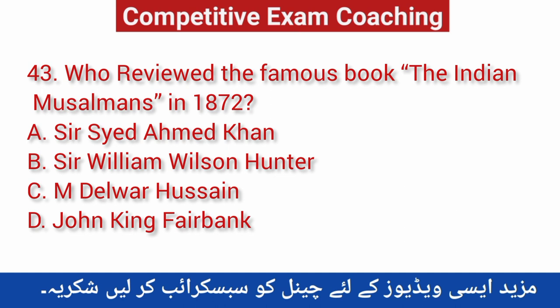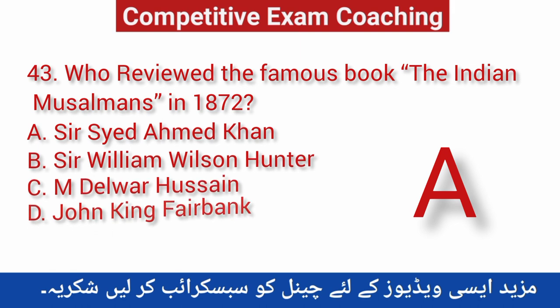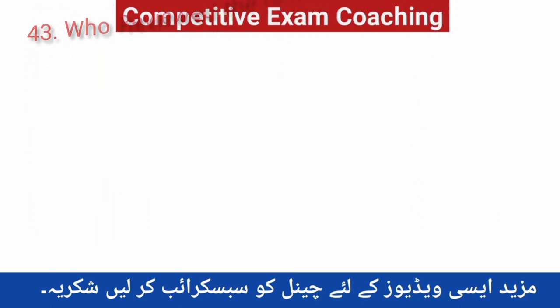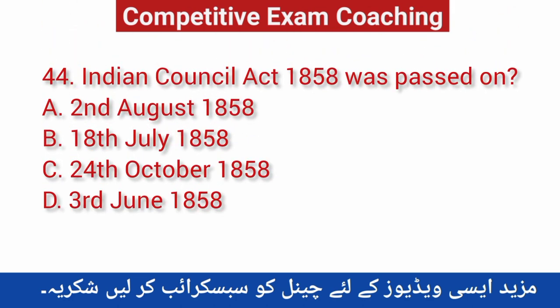Question number forty-three: The book 'Indians Musulmans' was written in 1872. Correct answer is D — Sir Syed Ahmad Khan. Question number forty-four: The Indian Council Act 1858 was passed on? Correct answer is A — August 1858.